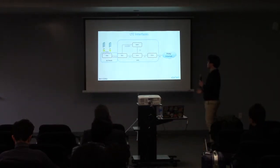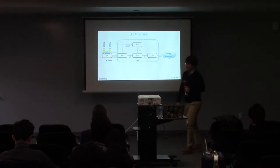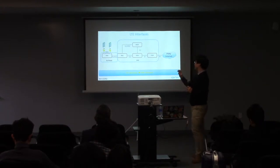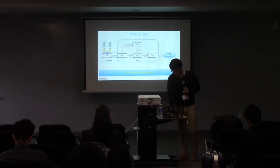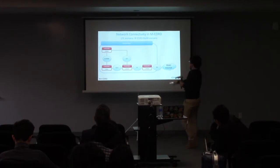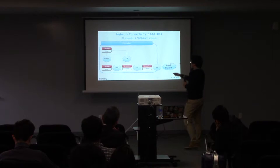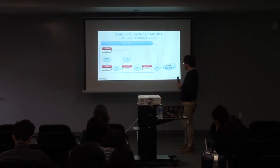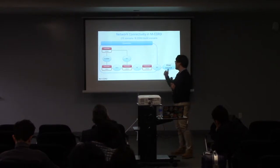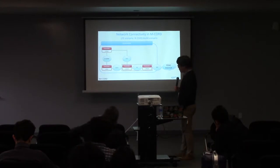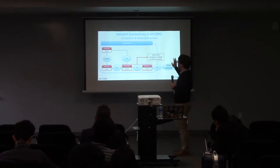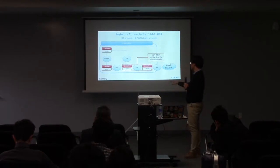We can use the XOS network to define each interface. For defining XOS LTE interfaces, we can use the XOS network in the mCORD part. Here, the blue box means the mCORD part, and there are four virtual network functions as mentioned. The green circles represent the LTE interfaces. Those two virtual network functions are combined into SP Gateway, and then we divide the SP Gateway into control plane and user plane. Of course, we can use the SDN controller in between.